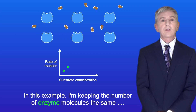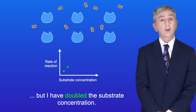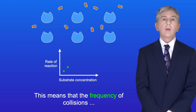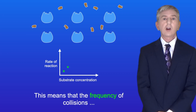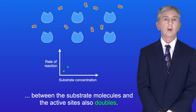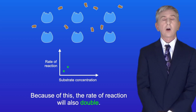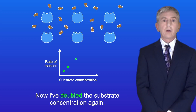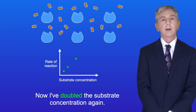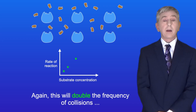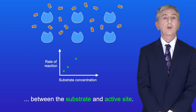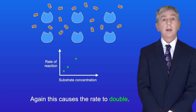In this example I'm keeping the number of enzyme molecules the same, but I've doubled the substrate concentration. This means that the frequency of collisions between the substrate molecules and active sites also doubles, and because of this the rate of reaction will also double. Now I've doubled the substrate concentration again, and again this will double the frequency of collisions between the substrate and active site, and again this causes the rate to double.